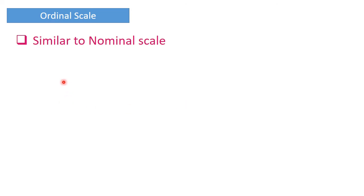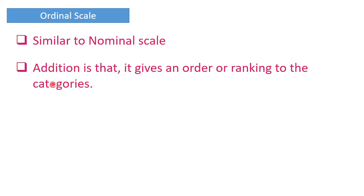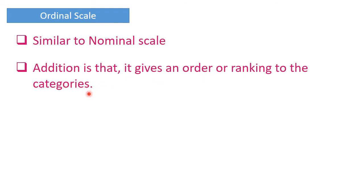Next is ordinal scale. This is very similar to nominal scale. One addition is that it gives an order or ranking to the categories. One can visualize the categories with reference to their position. However, one cannot measure the difference between two different classes as there are no values attached to it.